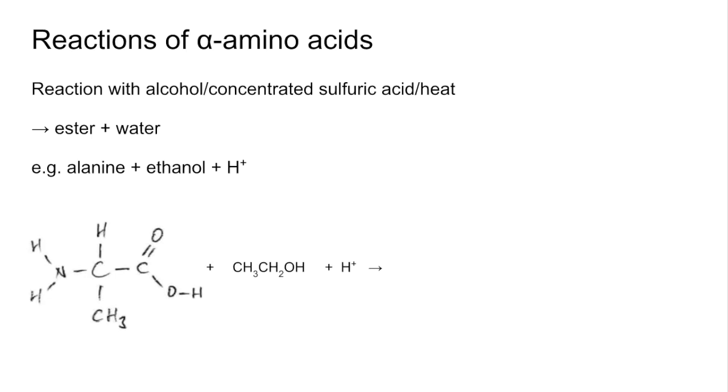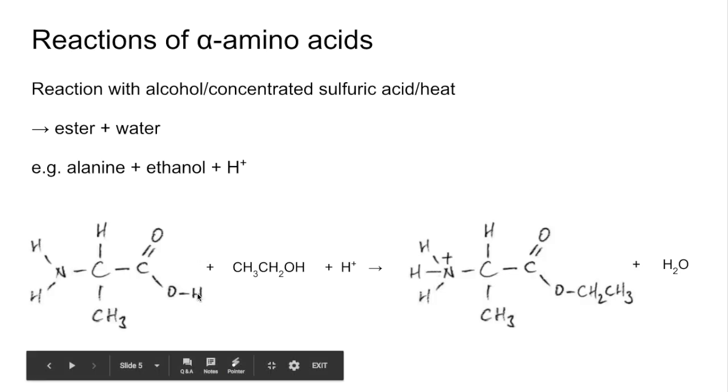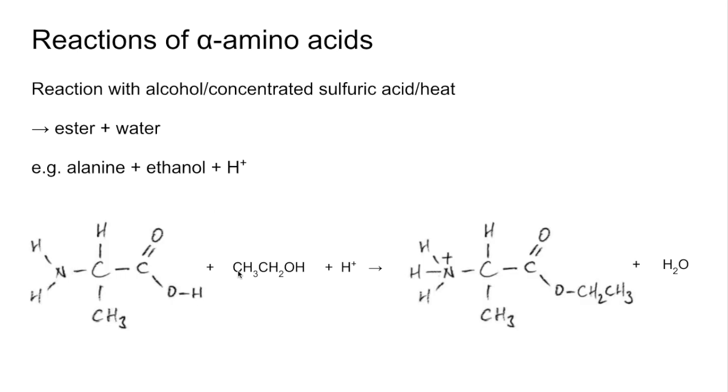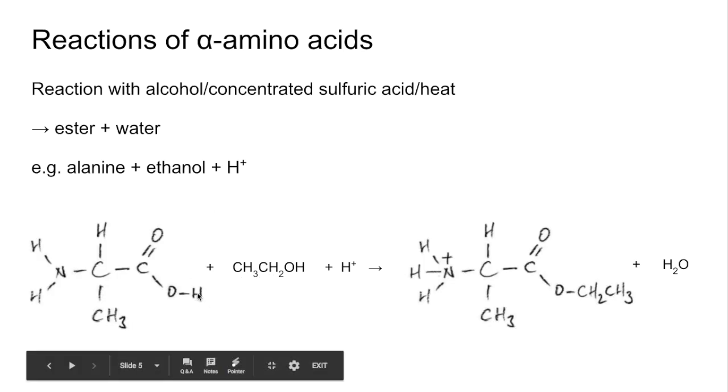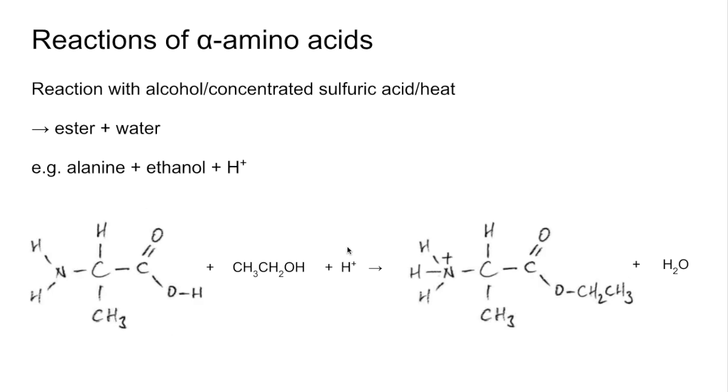You can see we've got an ester group formed, whereby essentially the H here has been replaced by this ethyl group. So we've got an ethyl ester formed. That's given us a water molecule - the H and the OH making the water. And something people often forget: the H+ from the acid can join with the N from the NH2 group, and that's going to give us this ammonium ion here.